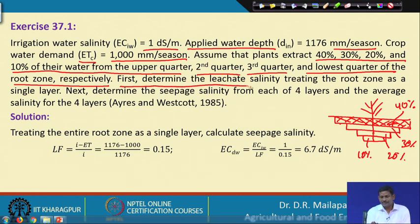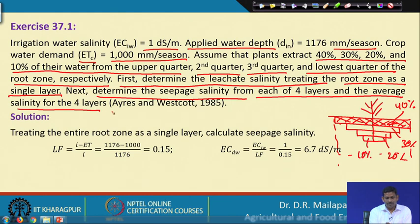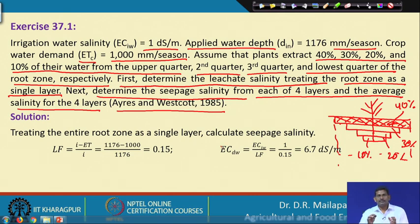The questions are: first, determine the leachate salinity treating the root zone as a single layer. Second, determine the CPS salinity from each of the 4 layers and the average salinity of the 4 layers. This is taken from Ayers and Westcott 1985. You have to find out the average salinity level in the root zone and then individual root zone layer salinity and then average of these layers.